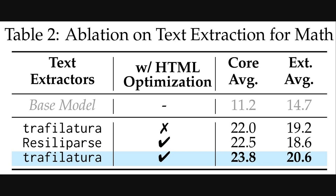But how did they decide on those specific steps? The paper includes several ablation studies to justify their choices. Table two zooms in on the text extraction part of the MegaMath Web pipeline. It basically compares different text extractors — specifically Trophilatura and Rassiliparse — and checks if optimizing the HTML for math first, like converting formulas to LaTeX, actually helps performance. And you can see it does. Trophilatura with the HTML optimization gets the best core average score at 23.8, compared to 22.0 without it. This shows their HTML processing step was pretty crucial for getting good quality math text.